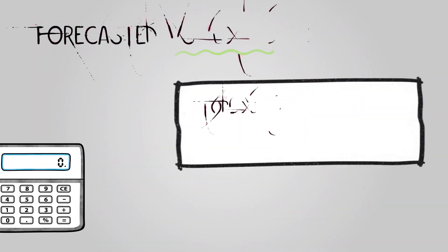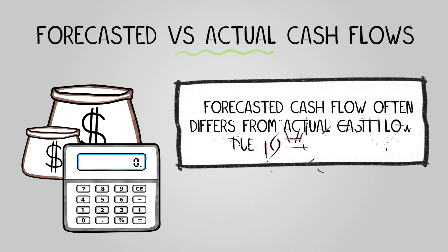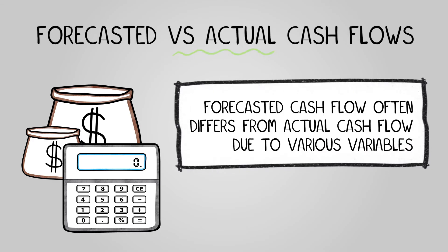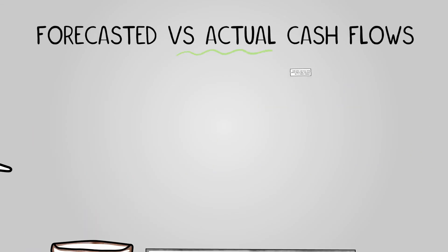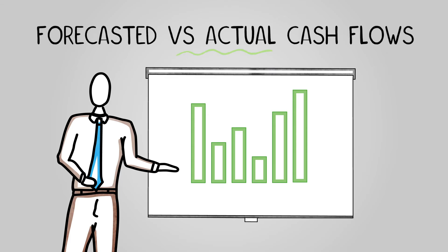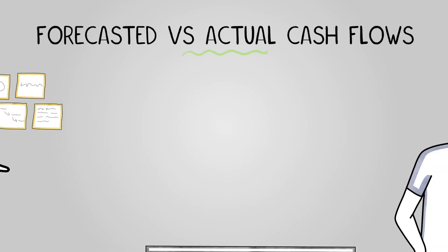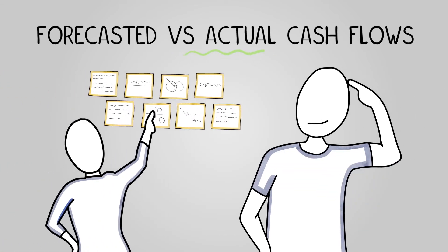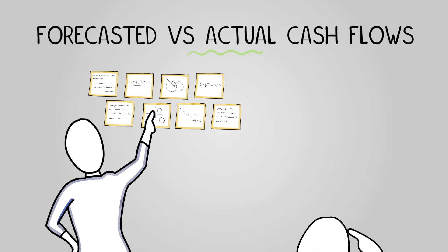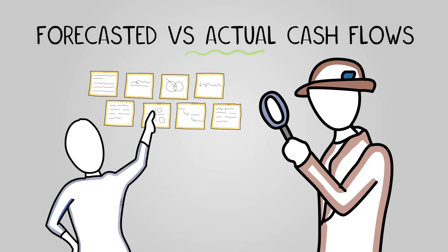Of course, forecasted cash flow often differs from actual cash flow due to various variables. When a business talks about actual cash flow, they refer to the real money exchanged in the business, calculated retrospectively using concrete figures, not estimates. It is useful for a business to compare its cash flow forecast with its actual cash flow, as it shows how well the business is on track to achieving its goals and highlights unforeseen elements if there's a significant difference.